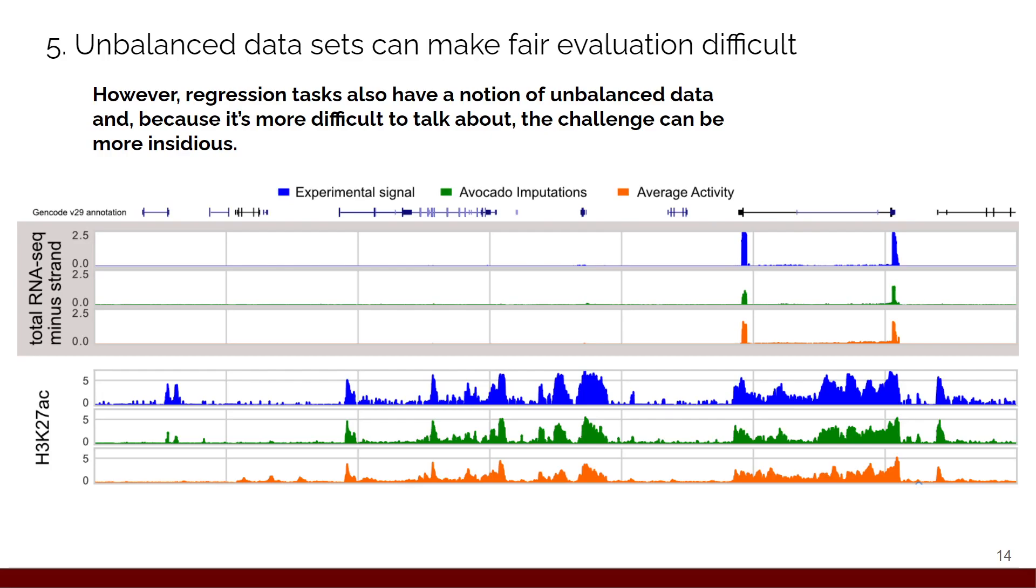However, the problem of imbalance isn't just on classification tasks. It's also on regression tasks. This can actually be a little bit more insidious because I've noticed that people don't quite know how to describe this properly in terms of the regression setting. So imagine this. This is in the context of imputing genomic data from my avocado paper. If you have total RNA-seq minus strand here on the top, you can see that the signal goes from 0 to 2.5 in blue, then we have the imputations in the baseline. On the bottom, we have acetylation data which goes from 0 to 5.